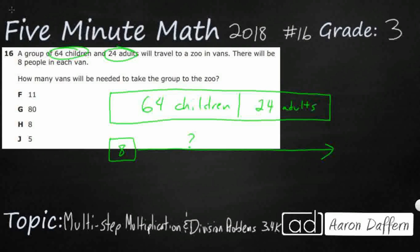Well, if we look at it this way, you could probably see that what we're going to need to do is first add up the 64 children and the 24 adults. Let's see how many people we have.